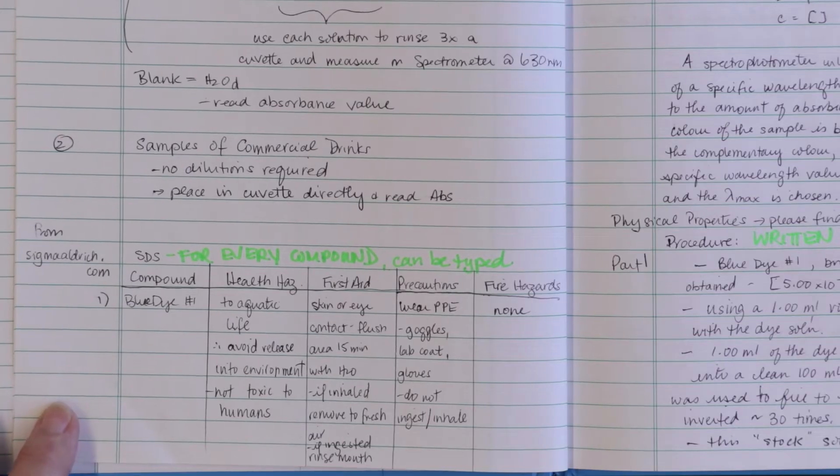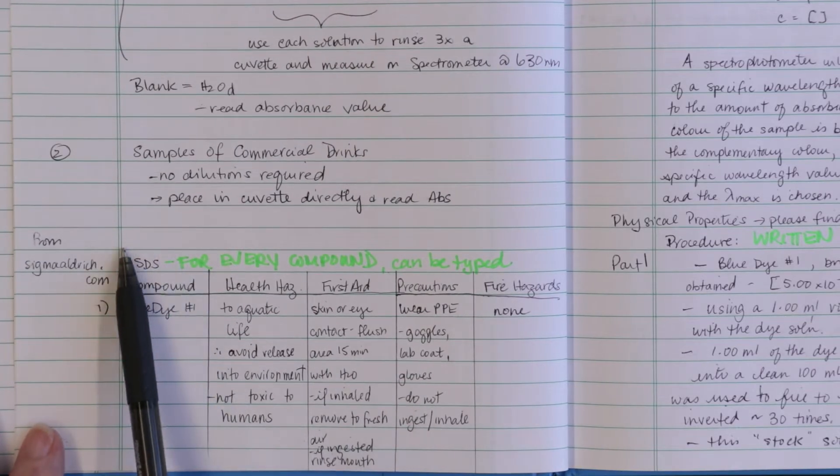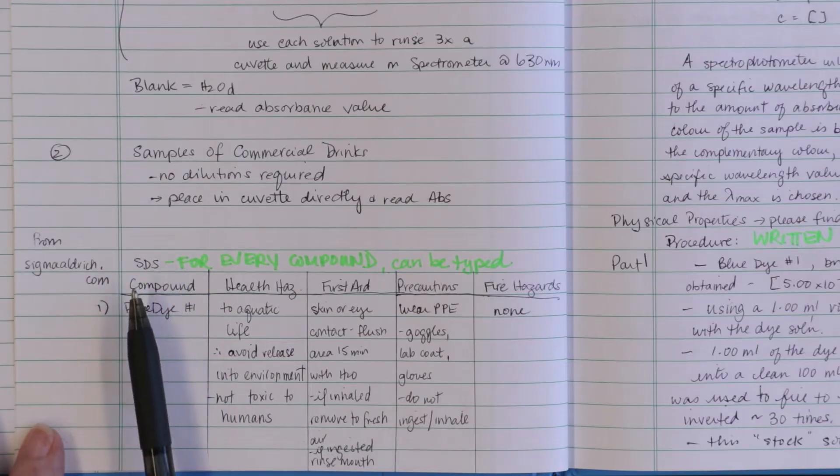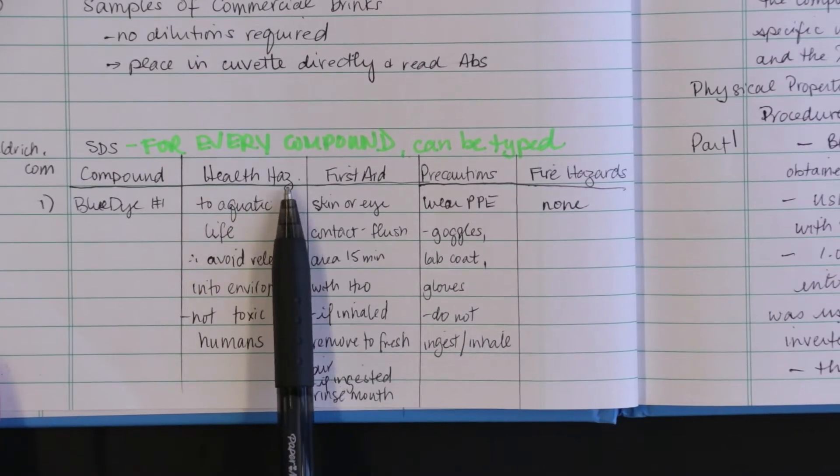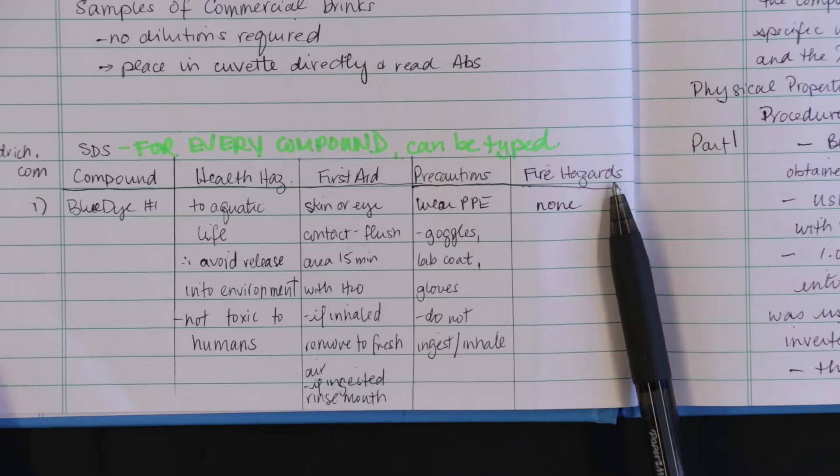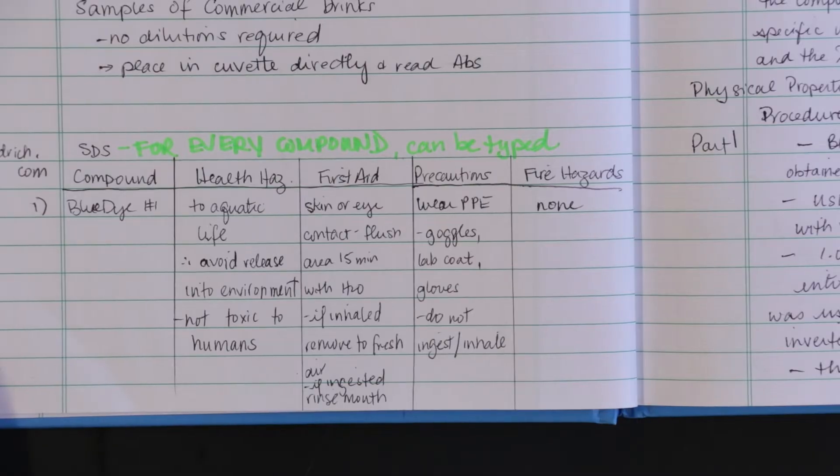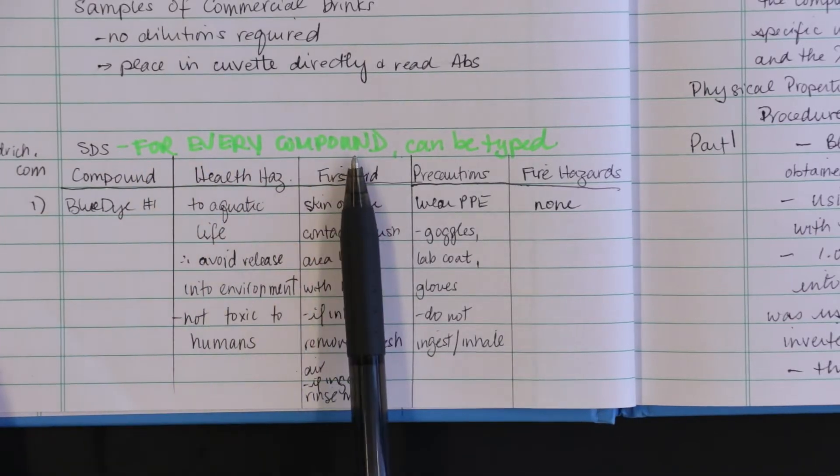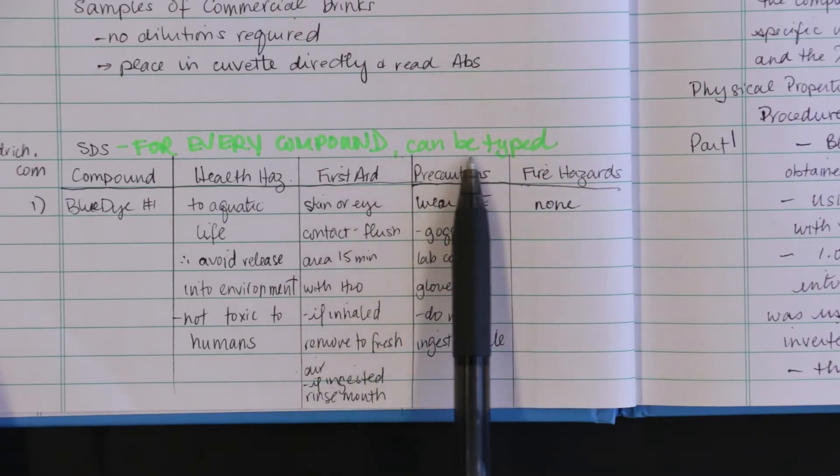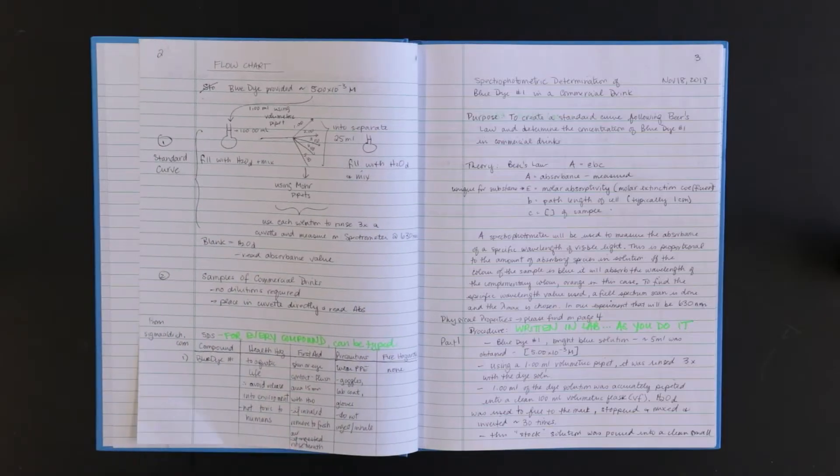You will need a chart of hazards for every chemical you will be using or making in this experiment. This is called the SDS, the safety data sheet information. The chemical, health hazards, first aid precautions, fire hazards are all included and whether it is an oxidizing or reducing agent or flammable. All this information can be found in the chemical safety data sheets found online that are specific for each chemical. Your manual will have more information on this. Every compound requires it and it can be typed and glued or taped into your notebook or handwritten. Always state your reference, in this case sigmaaldridge.com.